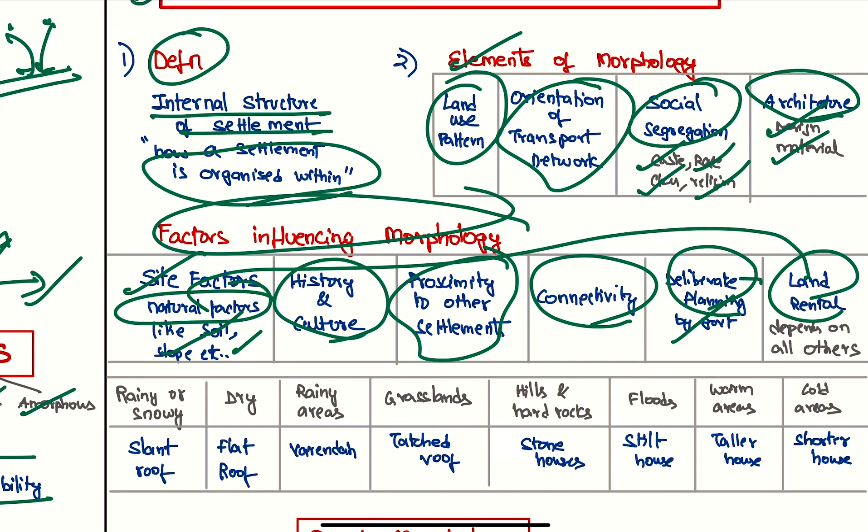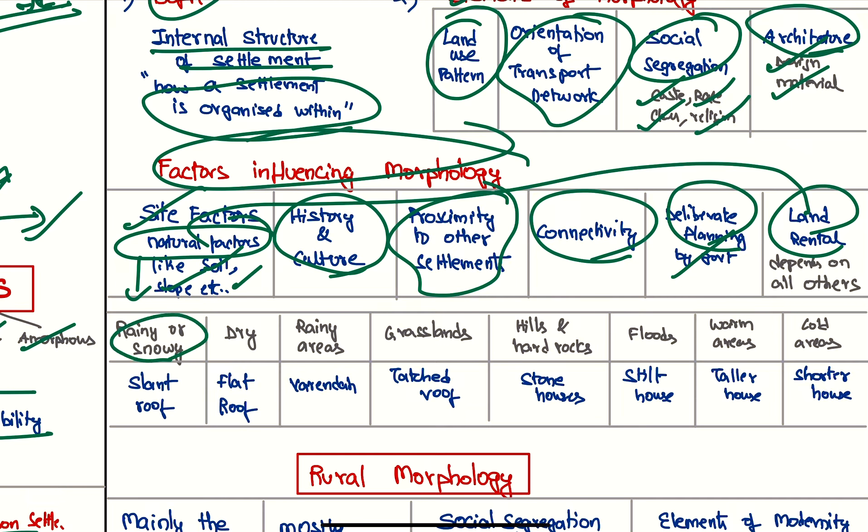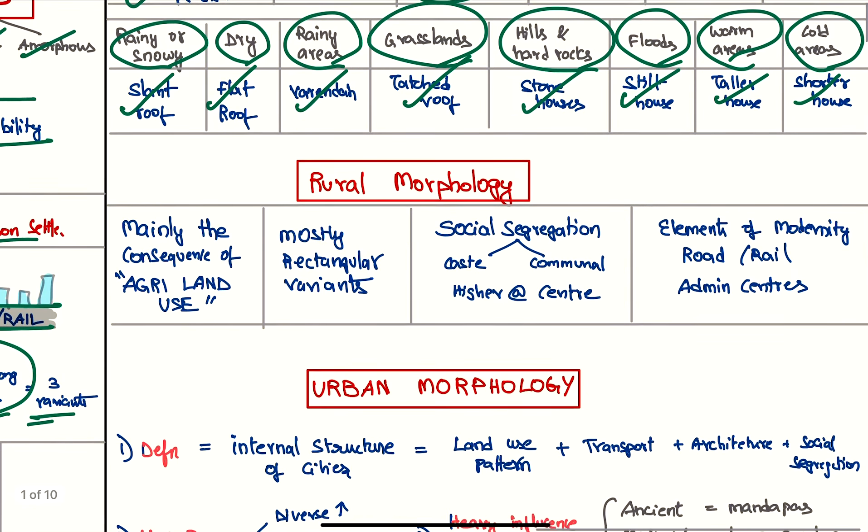Some of the site factors can be seen from this: in rainier, snowy areas we have slant roof; in dry regions we have flat roof; rainy areas we have veranda; grasslands we have thatched roof; hills and hard rock areas we have stone houses; in flooded areas we have stilt houses; in warm areas there are taller houses; and closed areas we have shorter houses.